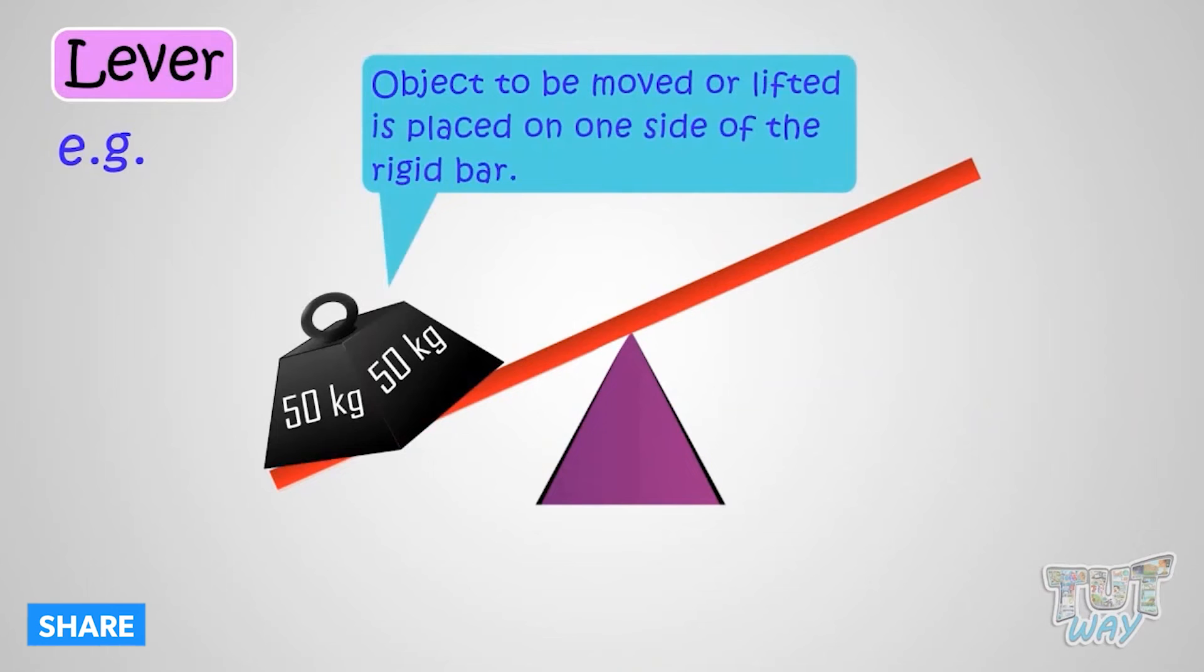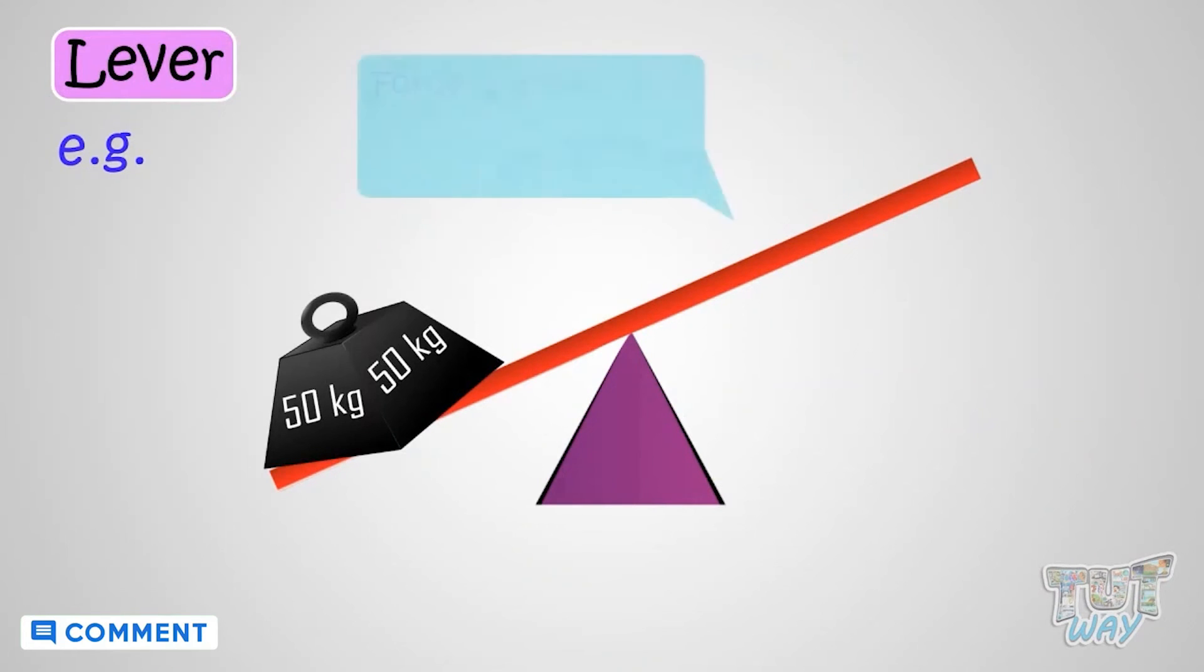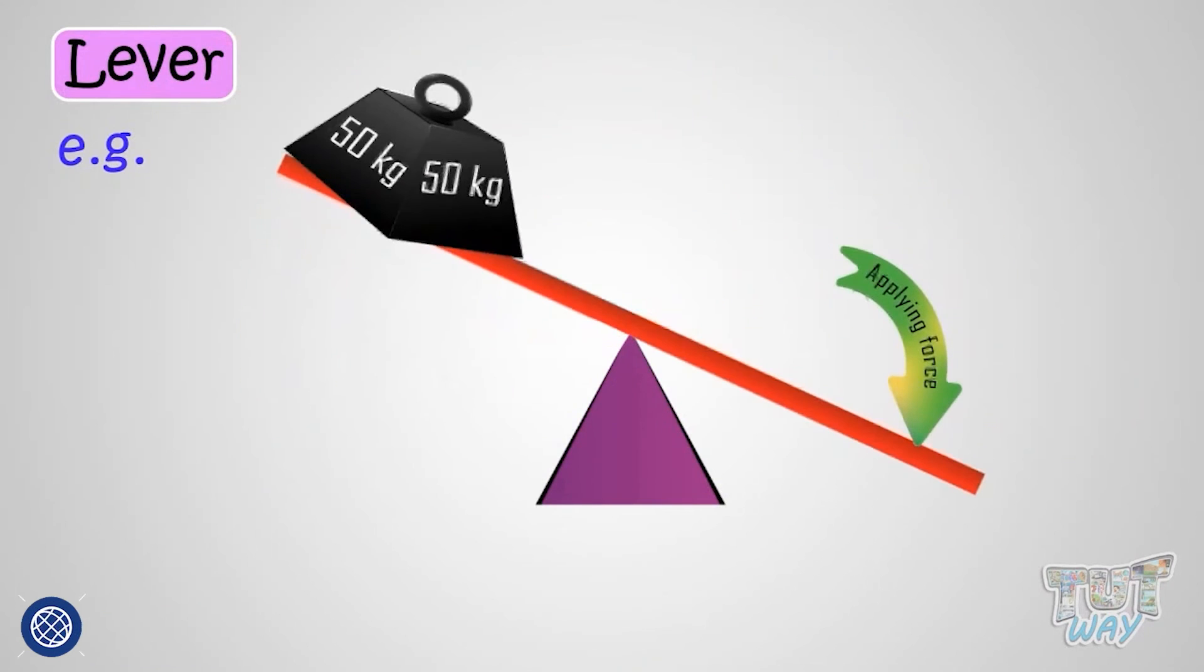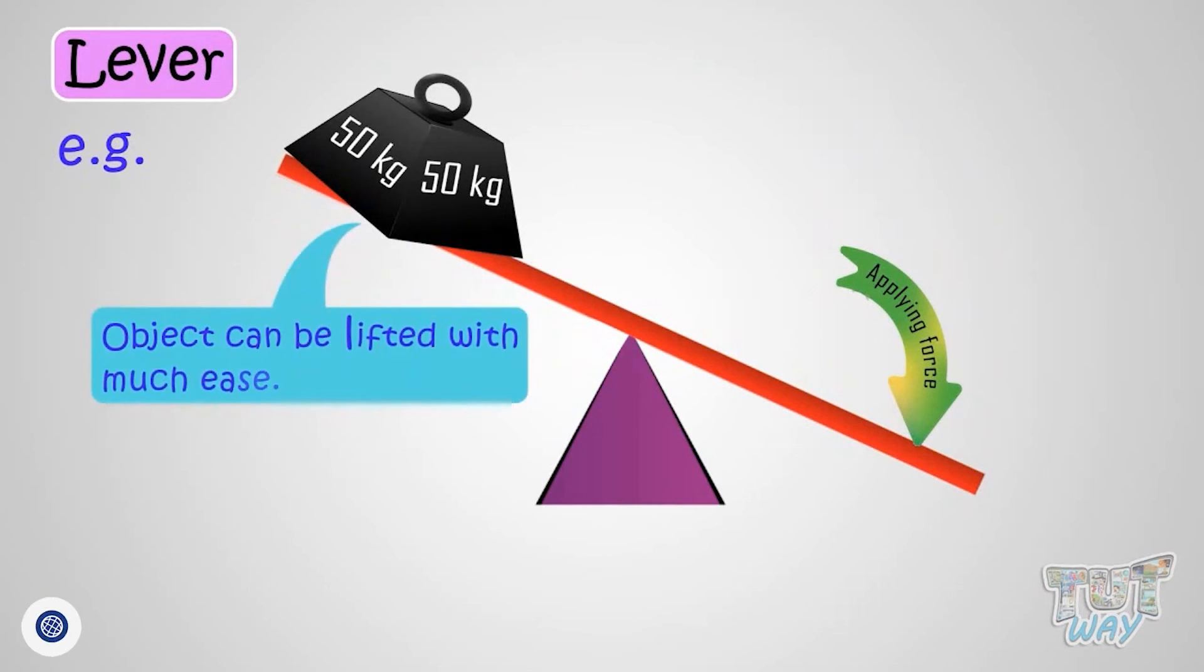It is placed on one side of the rigid bar and force is applied on the other side of the bar to lift it. This way the object can be lifted with much ease compared to lifting the object using muscular force.